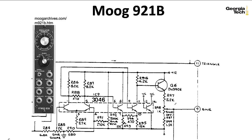The Moog 921, which is a later design, develops its sine wave differently. Here it uses a 3046 — a set of five matched NPN transistors, two of which are pre-wired to act as a differential pair. There's a trim pot for the symmetry of the sine wave, one for the offset of the sine wave, and one for the shape of the sine wave — so three trim pots total. It just takes a triangle in and gives you a sine wave out with a whole bunch of trim pots.